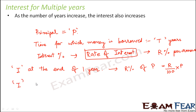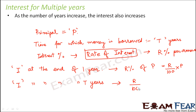To calculate the interest at the end of T years, you pay that same annual interest every year for T years. For example, if for one year you paid rupees 10 as interest, for two years you pay 10 × 2, for three years 10 × 3, for four years 10 × 4, and so on. Similarly, the interest for T years is the interest paid for one year multiplied by T.